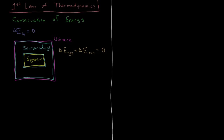That's the basics of the first law. In order to talk about the system more, we need to talk about what types of systems we can study — specifically, what things can exchange between the system and the surroundings. The system and the surroundings could exchange matter, and they could exchange energy. Now some of you are saying energy and matter are the same thing — E equals mc squared. Well, this is not relativity. We're going to consider matter and energy to be different things: matter being things that have mass, and energy being the capacity to do work.